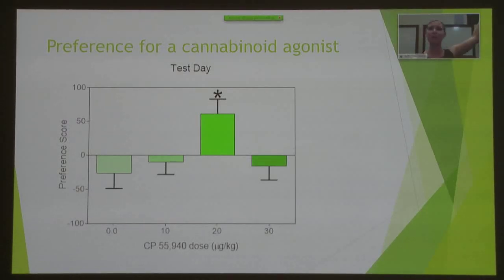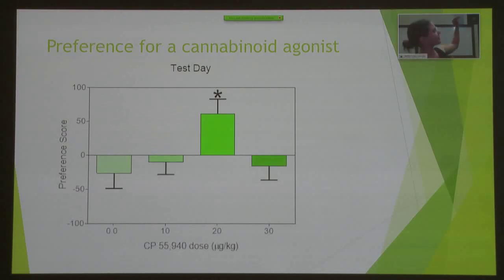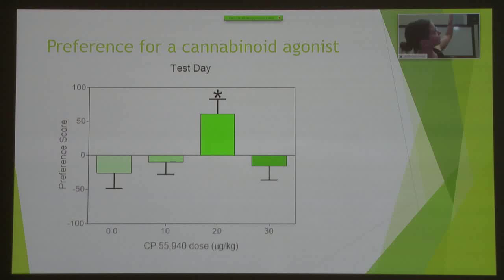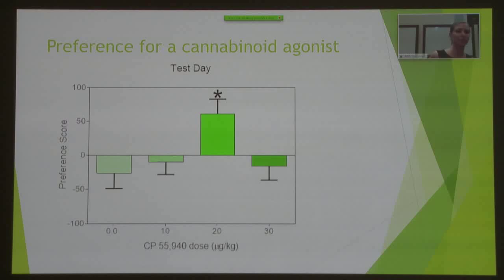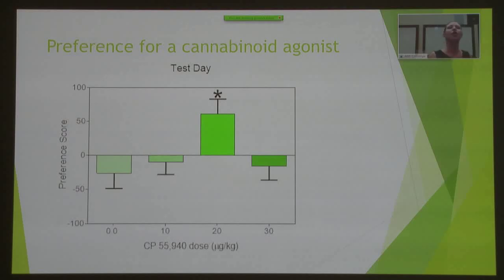Looking at data collapsed across all methylphenidate doses, we have all four methylphenidate doses included. On the x-axis are the four doses of the cannabinoid agonist, and on the y-axis is the preference score. Negative numbers indicate aversion and positive numbers indicate preference. Collapsed across all methylphenidate dosages, rats showed a preference for the 20 microgram per kilogram dose of our cannabinoid agonist — regardless of methylphenidate pretreatment.